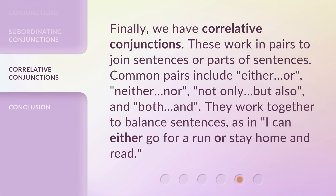Finally, we have correlative conjunctions. These work in pairs to join sentences or parts of sentences. Common pairs include either...or, neither...nor, not only...but also, and both...and. They work together to balance sentences, as in: I can either go for a run or stay home and read.